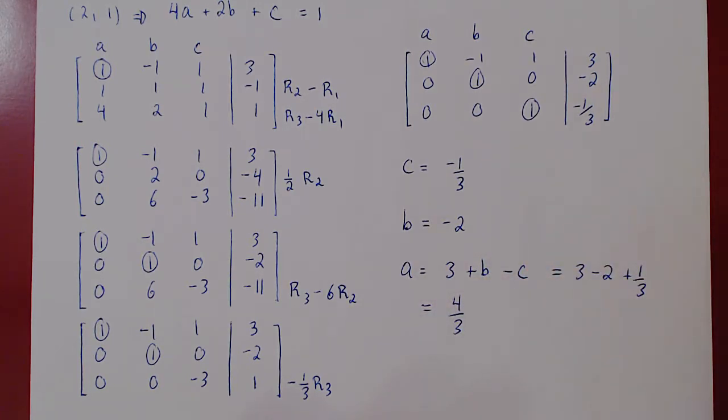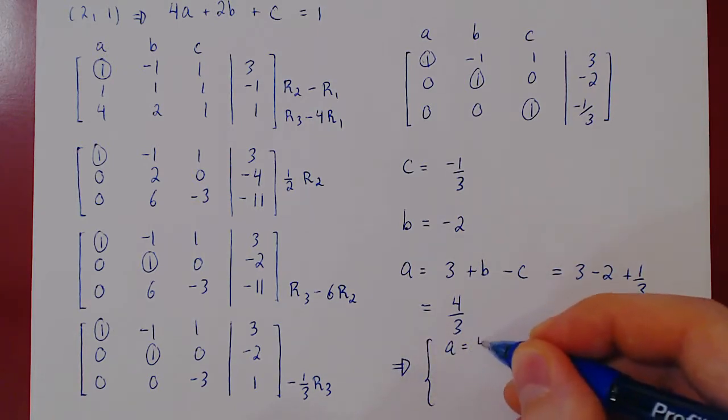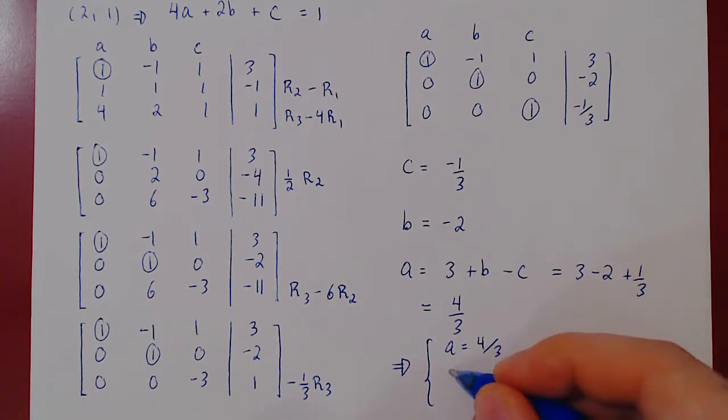And so we now have our unique solution. A equals four thirds. B equals negative two. C equals negative one third.